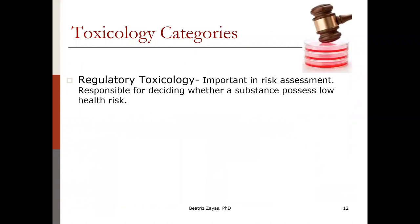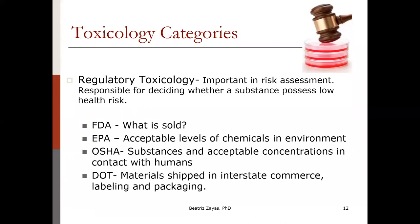Another area of toxicology is regulatory toxicology, which is very important for the environmental field and for establishing risk assessment. It's responsible for deciding whether a substance possesses a low health risk. Regulatory agencies rely on regulatory toxicology — for example, the FDA uses it to determine what can be sold, the EPA uses it to determine acceptable levels of chemicals in the environment, and OSHA and the Department of Transportation also rely on it.